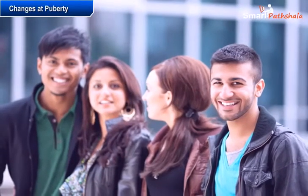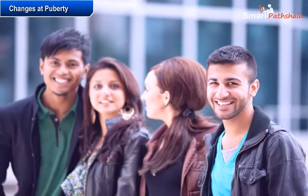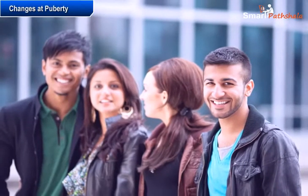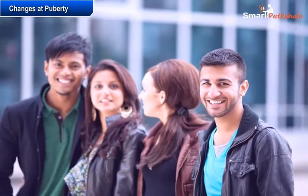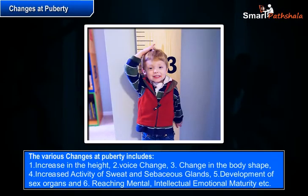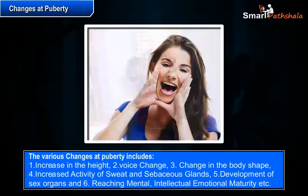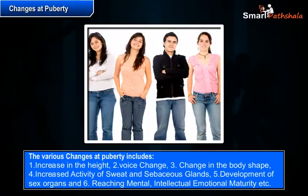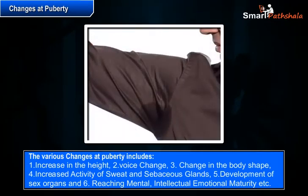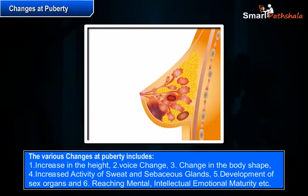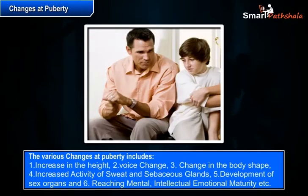As we learned in the previous module, at puberty various changes occur in the human body. Now let us learn about the various changes that occur in detail. The various changes at puberty include increase in height, voice change, change in body shape, increased activity of sweat and sebaceous glands, development of sex organs, and reaching mental, intellectual and emotional maturity.